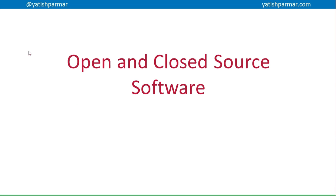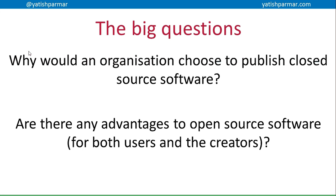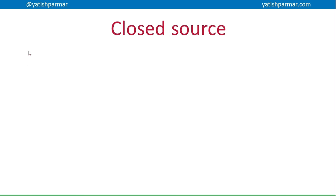Mr. Palmer here with another A-level computer science video on open and closed source software. There are two big questions for this one: why would an organization choose to publish closed source software, and are there any advantages to open source software, thinking about both users and the actual creators of the software?